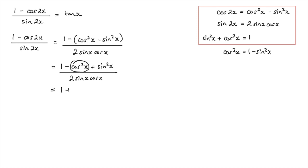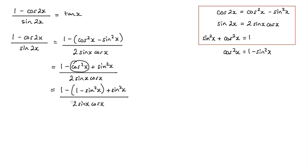So we've got 1 minus, and in brackets, 1 minus sine squared x, plus sine squared x from before, and that's all over 2 sine x cos x. Expanding gives us 2 sine squared x, and that's all over 2 sine x cos x.